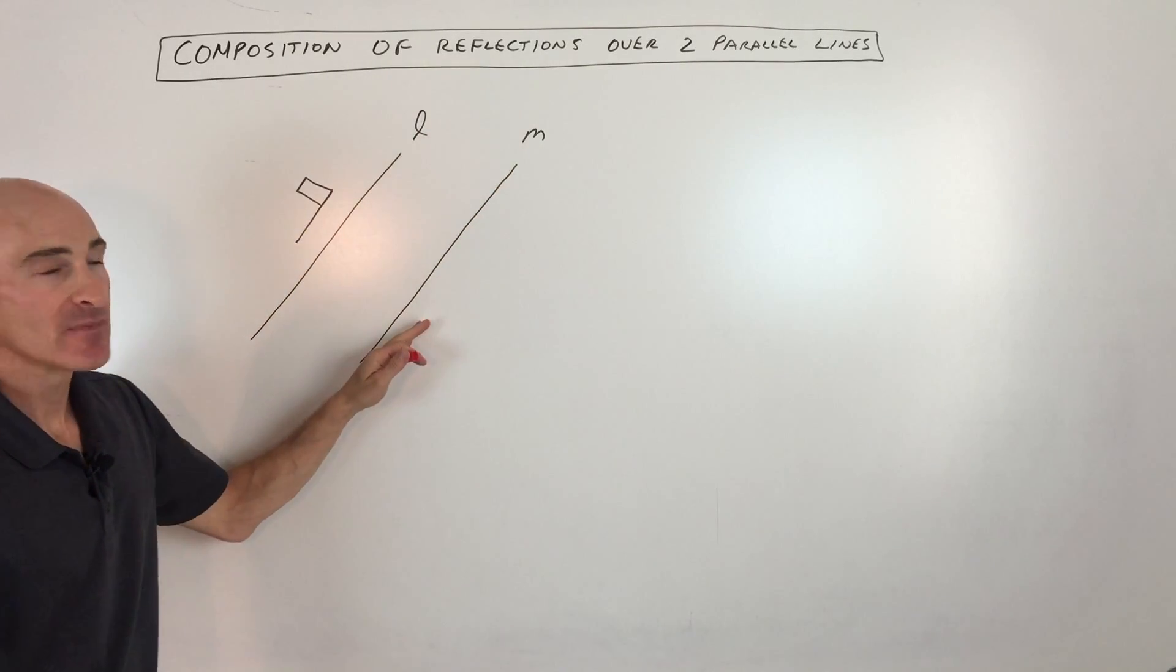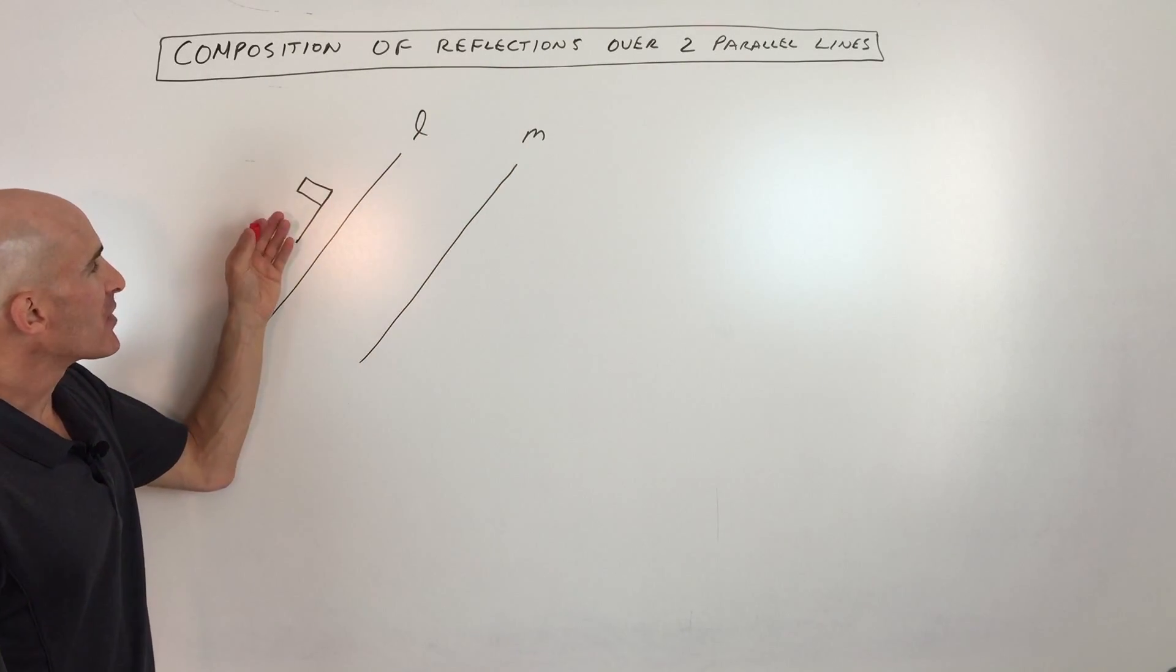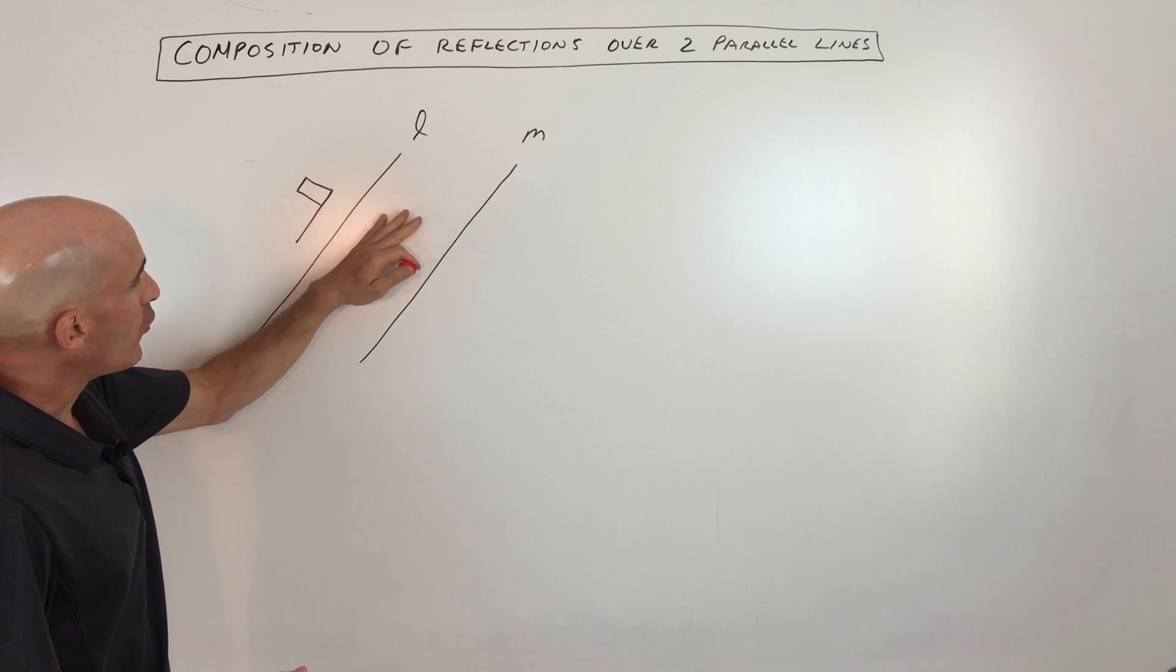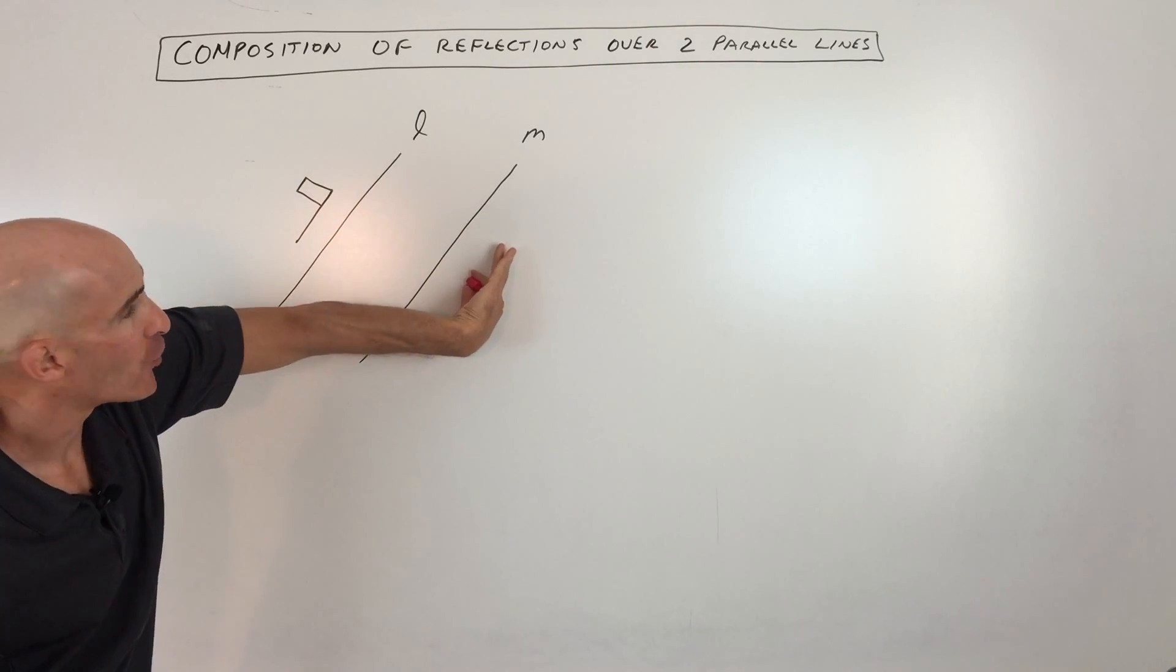Two parallel lines, say like L and M, and you have an image over here. Let's call this the pre-image. What we're going to do is reflect it over line L, and then reflect it over line M.